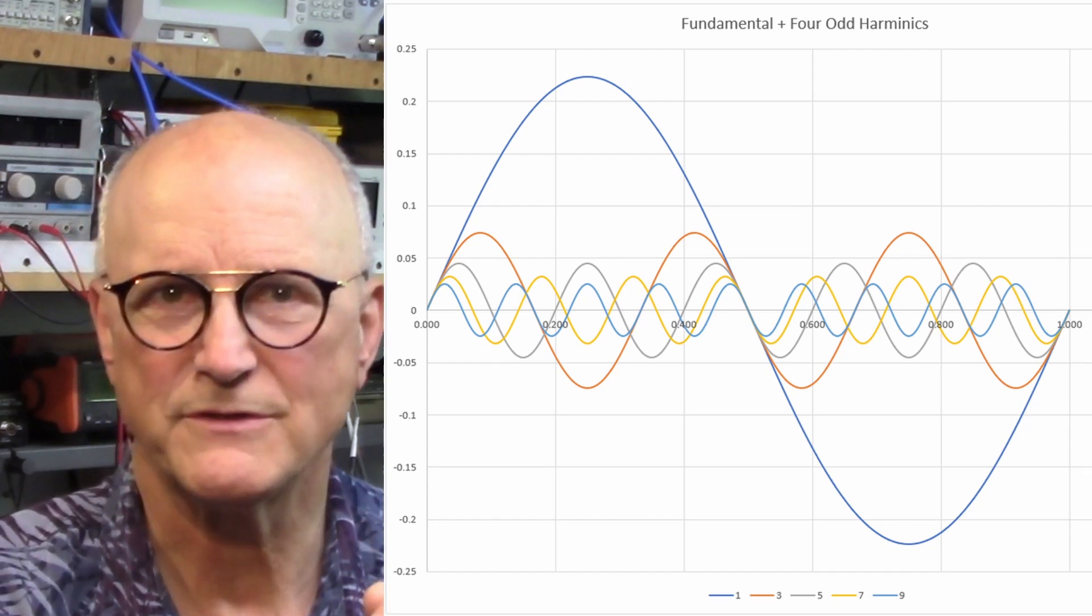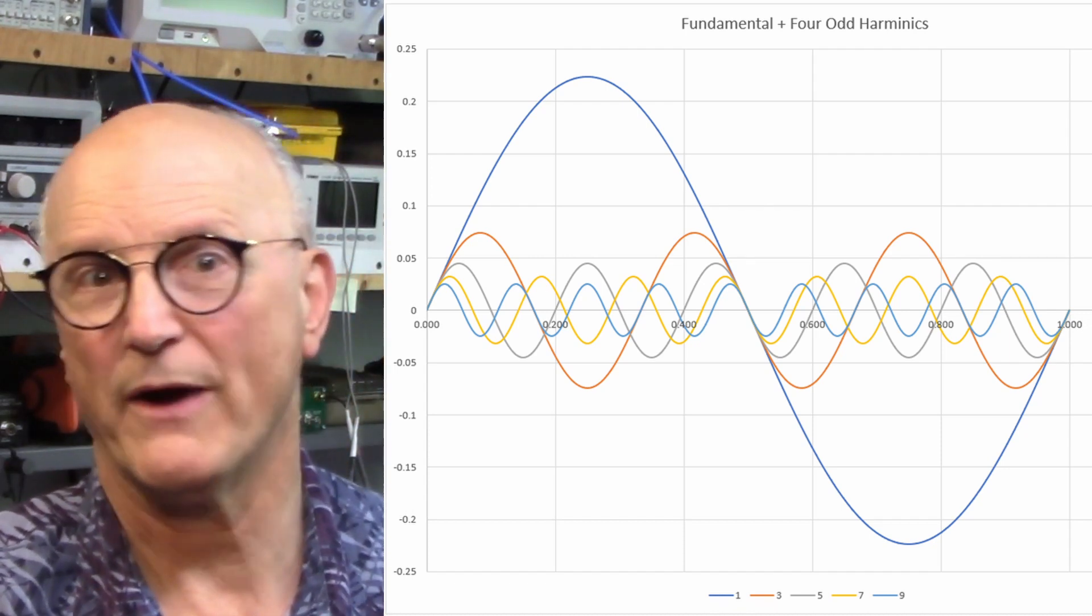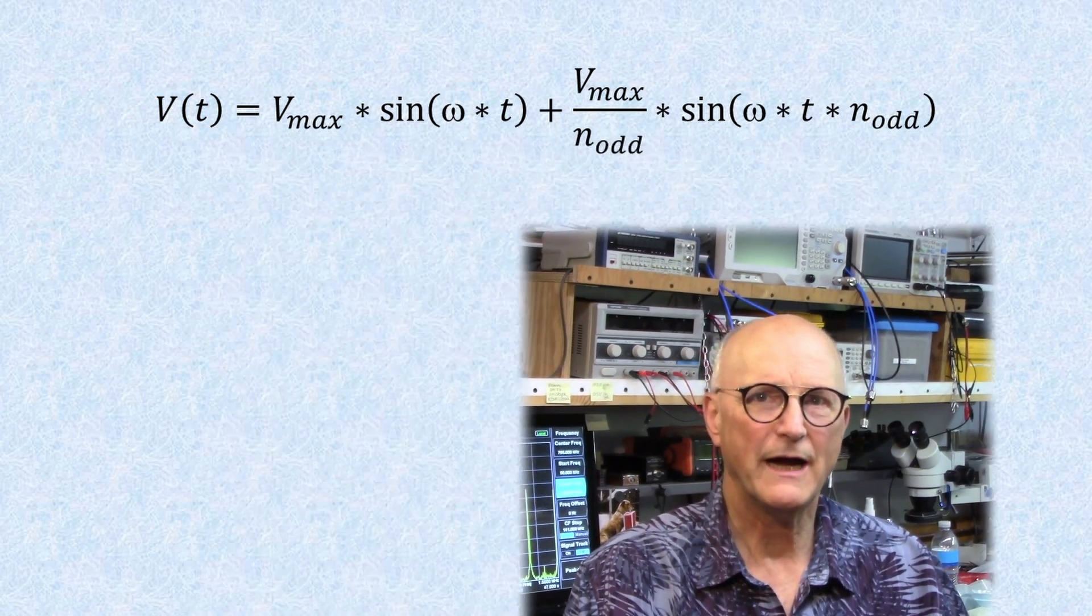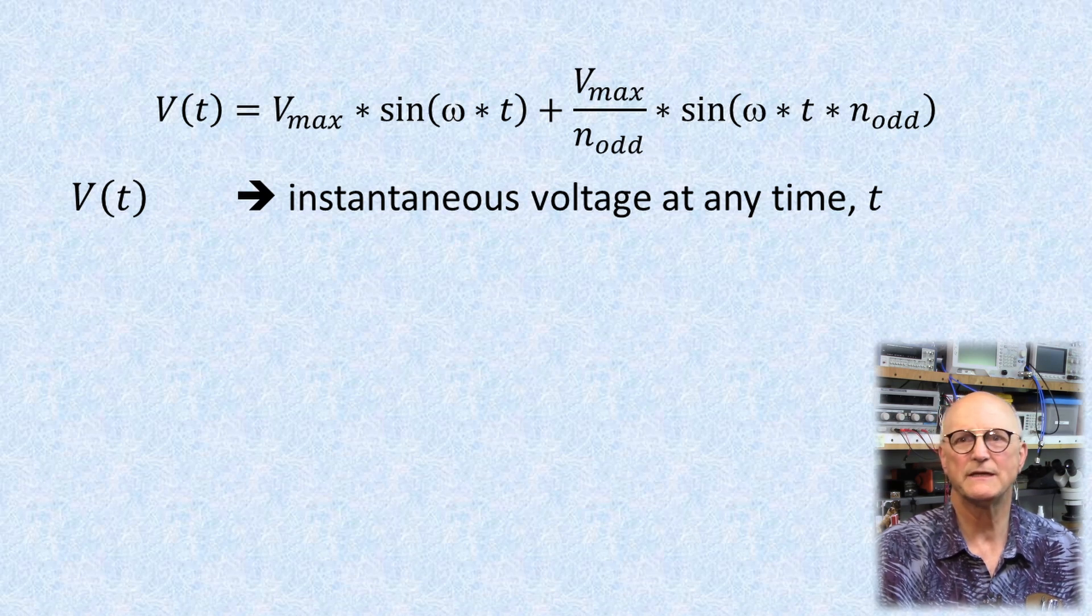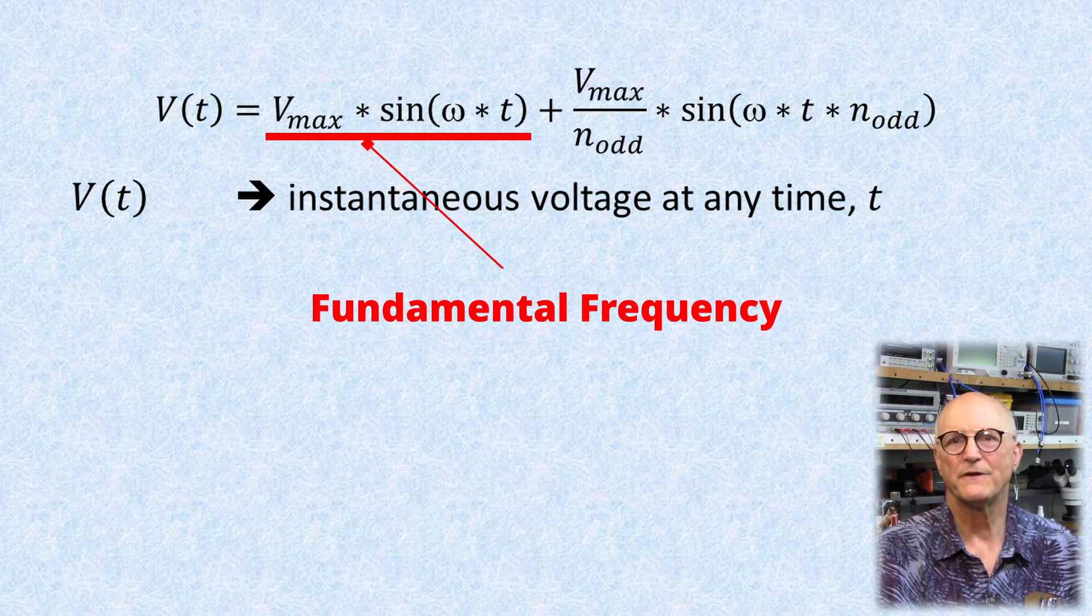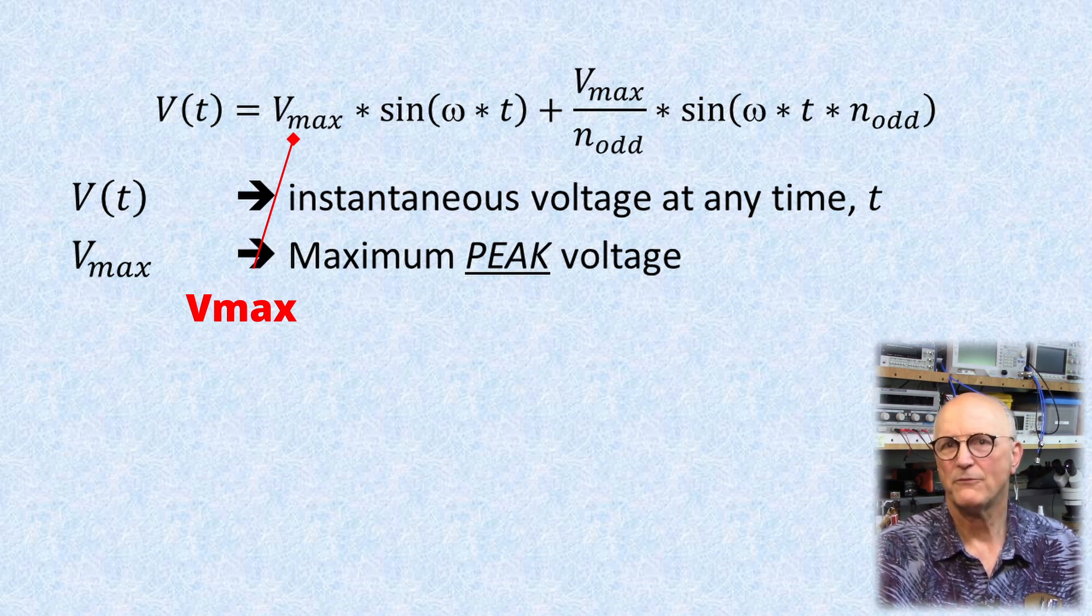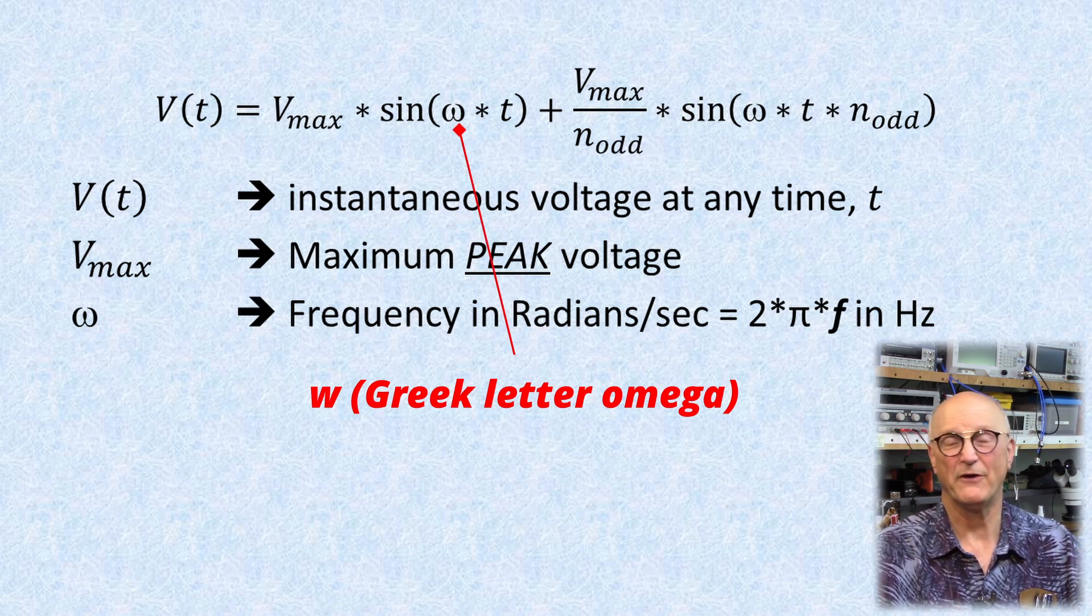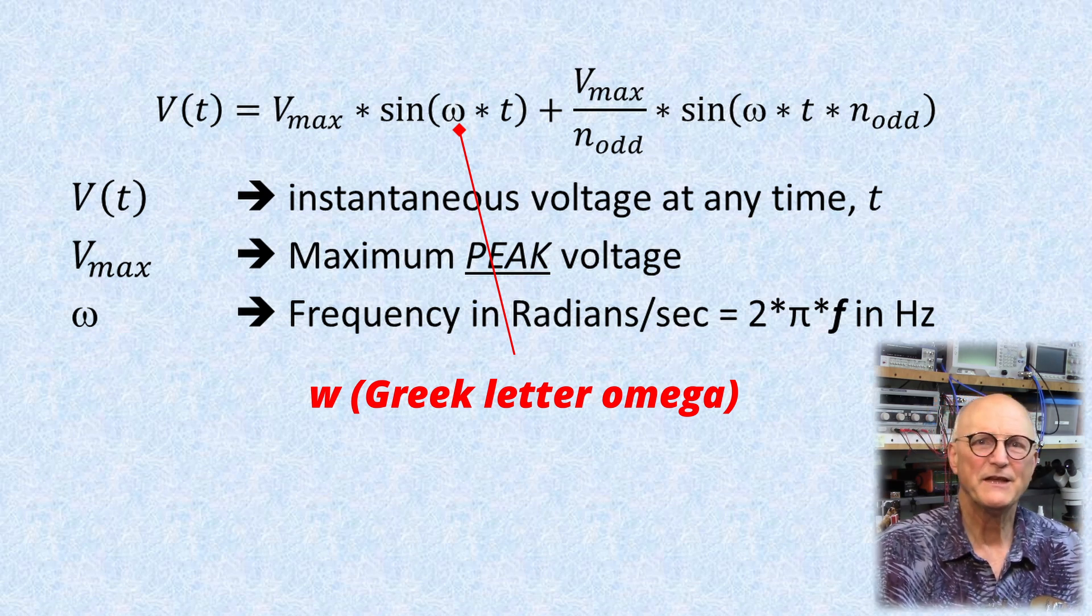Now this is something you can experiment with in Excel. I've made my Excel playground for this available to you - see the link in the description below. Now here is the time domain equation for a square wave. This formula calculates the instantaneous voltage of our signal at any time t. The first term is the fundamental or first harmonic. V_max is the maximum peak voltage of the sine wave. Then you ask, what is that weird omega in there? Well, that's an omega, which is the standard symbol. It is the frequency in radians per second.